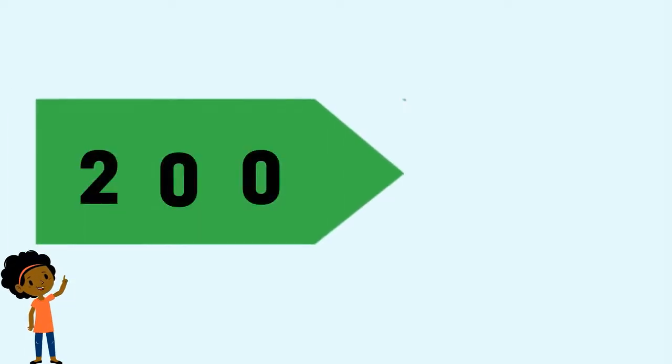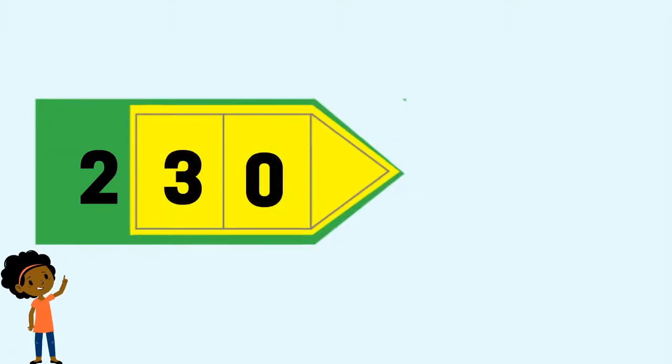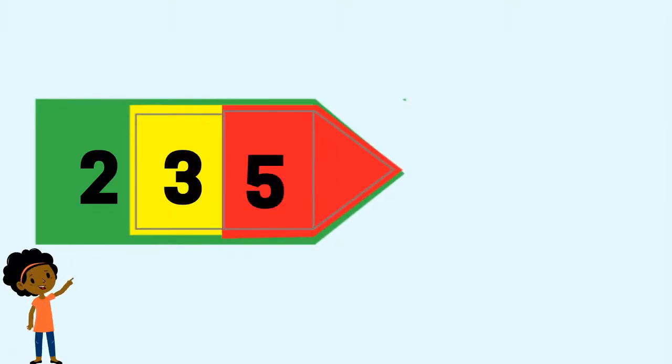Let's use arrow cards to represent 235. We will need 200, three tens, and five units.